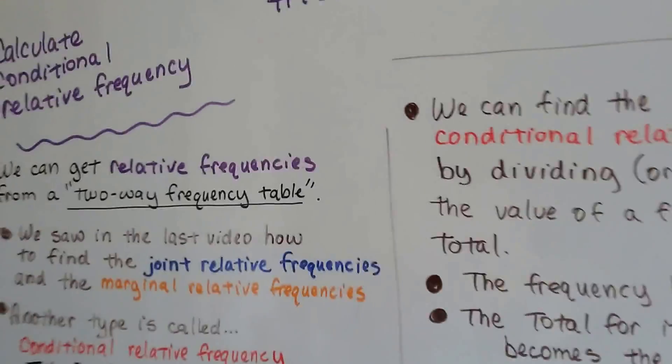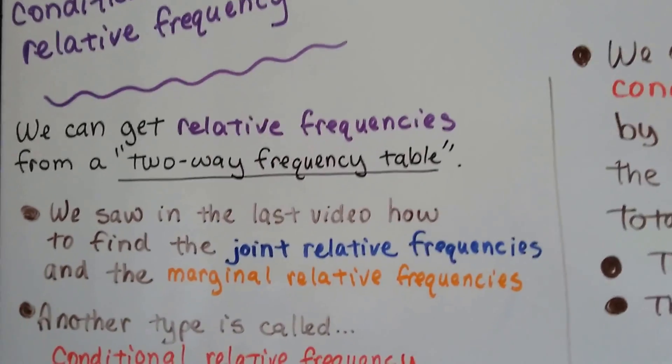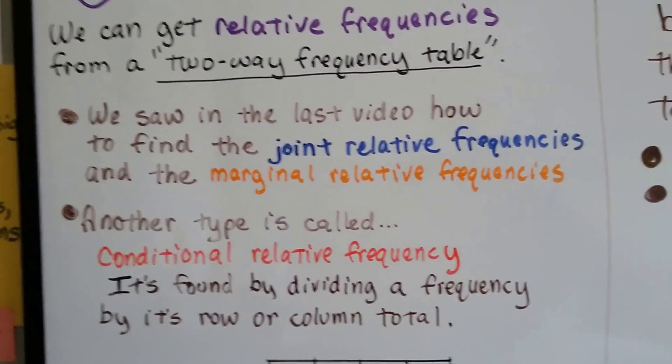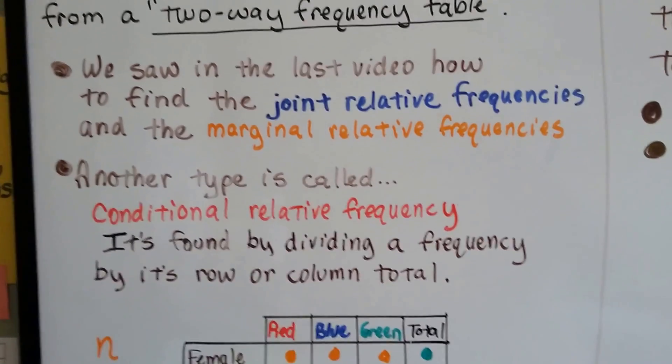So we can get relative frequencies from a two-way frequency table. And we saw in the last video how to find those joint relative frequencies and the marginal relative frequencies.